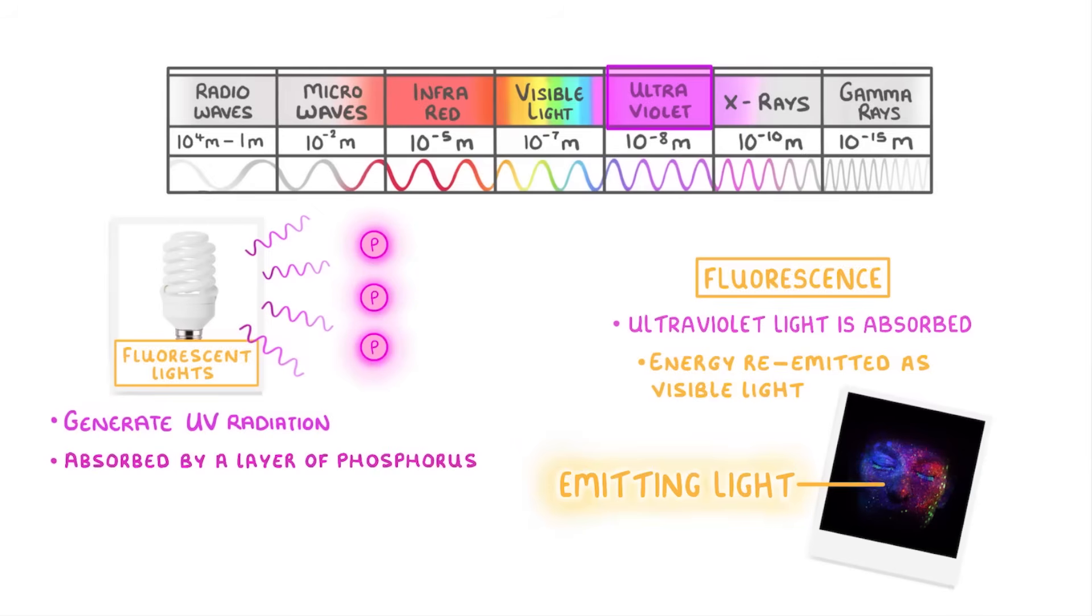Then because the phosphorus has so much energy, it re-emits the energy as visible light. And so we've effectively converted the ultraviolet light into visible light, which we can then use to see by.